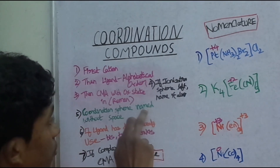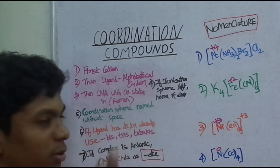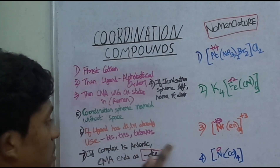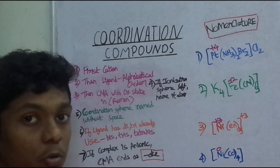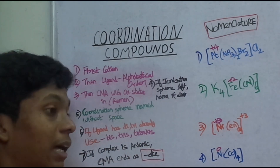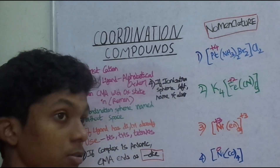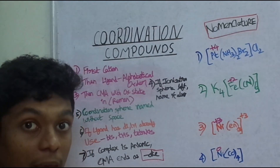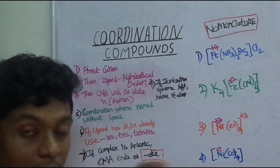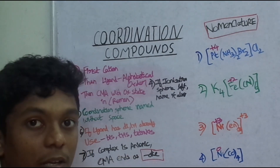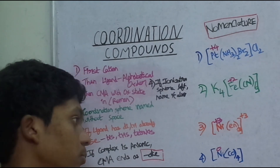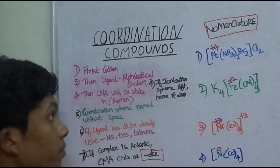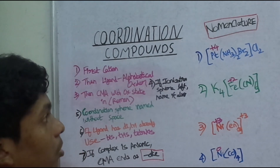The 5th rule is just the 5th one. The 6th and 7th are special rules. You can apply all of them. Once you apply all of them, you will be able to name any coordination compound. So let's start.